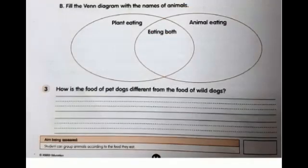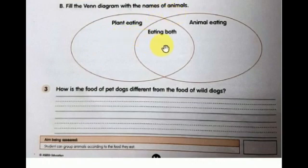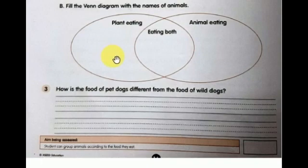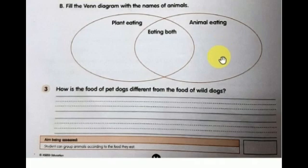Next question: Fill the diagram with the names of animals. Plant-eating: Hen, Cow, Elephant, Horse. Eating both: Cat, Dog, Duck. Flesh-eating: Vulture, Frog, Tiger, Crocodile.